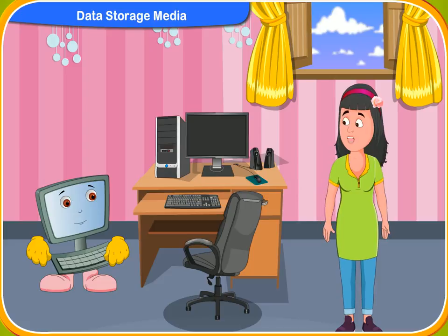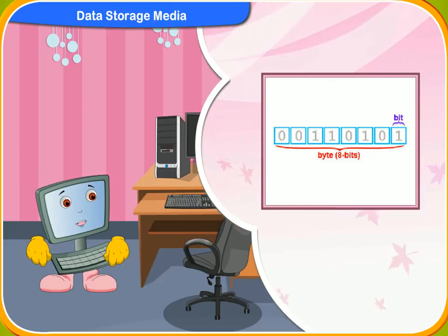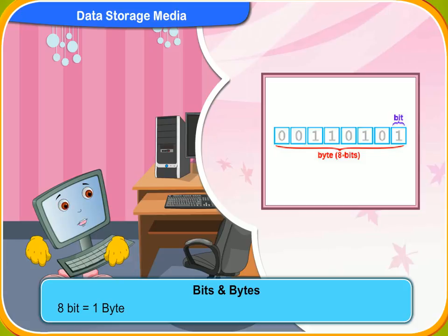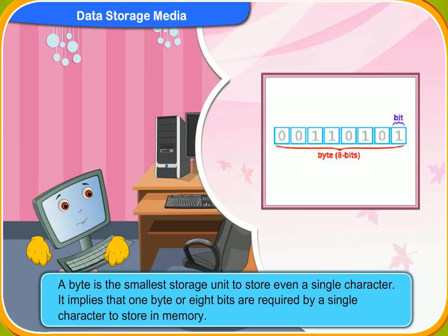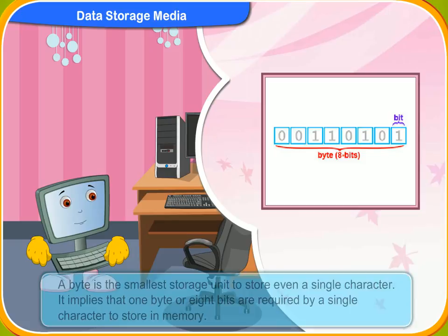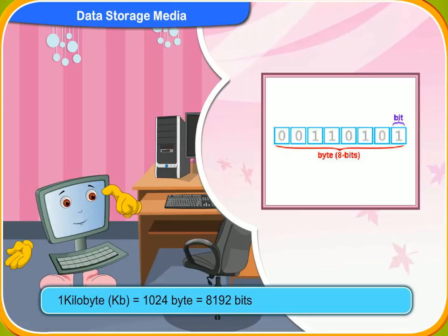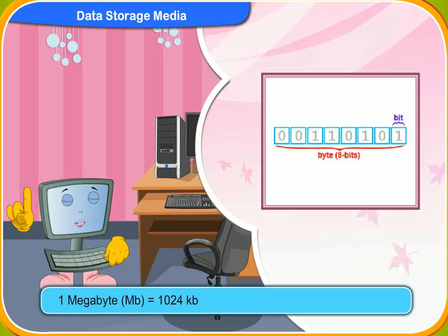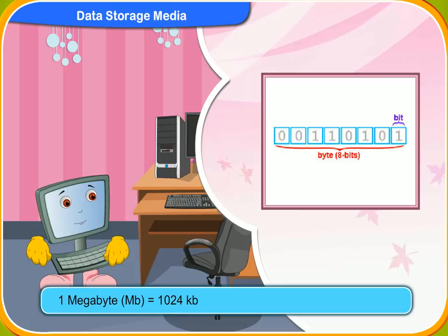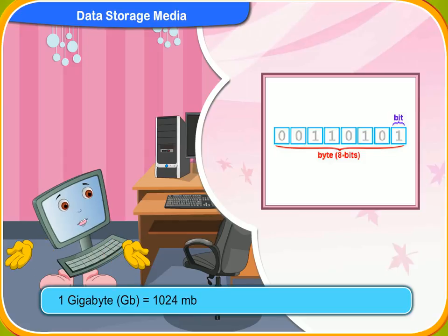What is the difference between bits and bytes? Bytes are bigger than bits. 8 bits make 1 byte. A byte is the smallest storage unit to store even a single character. It implies that 1 byte or 8 bits are required by a single character to store in memory. 1 kilobyte consists of 1024 bytes, so 1 kilobyte contains 8192 bits. 1 megabyte is made up of 1024 kilobytes. 1 gigabyte is equal to 1024 megabytes.